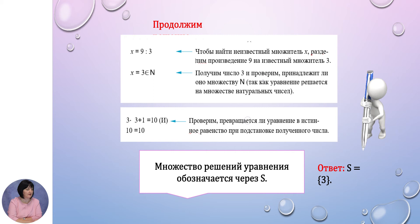Сделаем проверку. Подставим это значение в буквенное выражение: 3 умножить на 3 плюс 1 действительно равно 10. Мы получили истину, и это говорит о том, что число, полученное в результате решения, является именно тем решением, которое мы искали. Множество всех решений обозначается буквой S. Ответ записывается следующим образом: S = {3}.